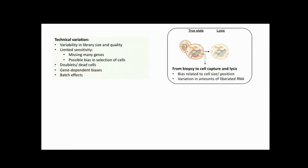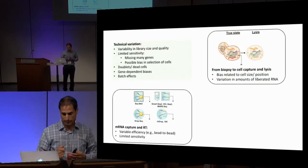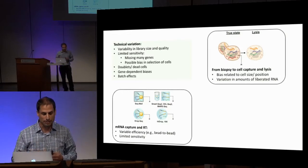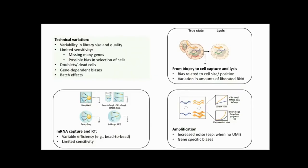The first contributor has to do with taking cells from the biopsy to capture and lysis. This can create biases related to cell properties like cell size, cell position, or the timing from getting the cells to lysis, and can also introduce variation in the amount of liberated RNA. The second part involves mRNA capture and reverse transcription, where we can have quite variable efficiencies due to cell-to-cell variation and limited sensitivity, giving rise to limited coverage. Finally, everything having to do with amplification bias — things in PCR that create gene-specific biases like GC content and length — though this is addressed to some extent when working with UMIs.